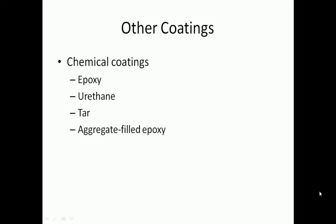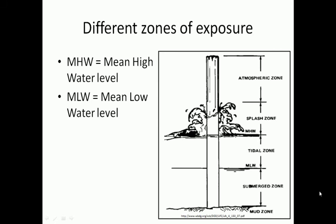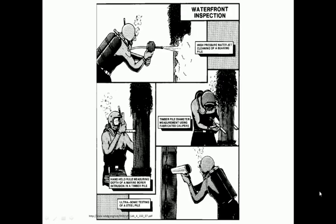Different coating materials are applied to different areas of exposed steel depending on the conditions. There are several zones in which the corrosion of steel occurs. The methods discussed so far pertain to the steel below the water level. However, the area of greatest risk for corrosion is from the splash zone down to the mean low water level. The Department of Defense is one of the only agencies that specifies the procedure for underwater inspection of pilings and other steel harbor structures.